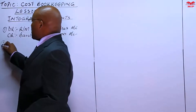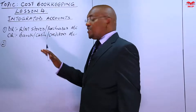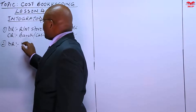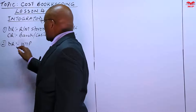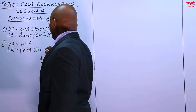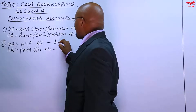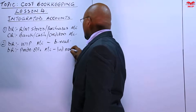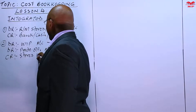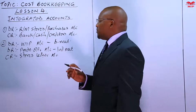Number two is about the issuing of materials, which does not have much difference. The difference is here, where we are creating this instead of creating the general ledger. When it comes to issuing of materials, we debit the WIP. We can also debit the production overheads account — for direct materials and indirect materials respectively — and then credit your stores ledger account. That's how you handle materials.